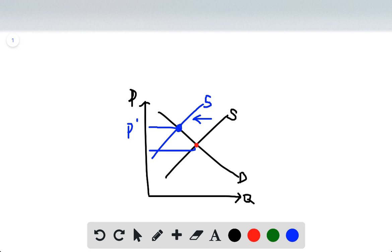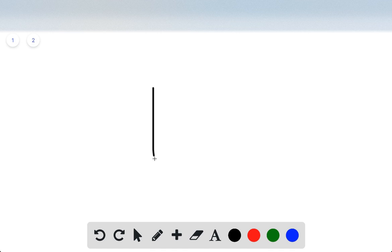So we again draw a supply and demand curve. We have to be sure that we always put Q on the x-axis and P on the y-axis. The supply and demand curve looks like this: demand has negative slope and supply has positive slope.